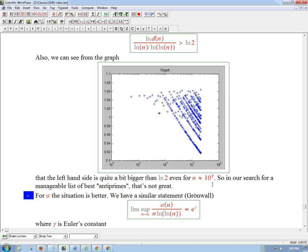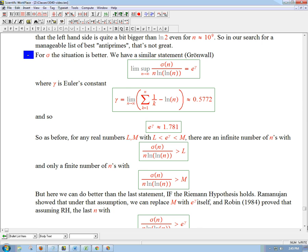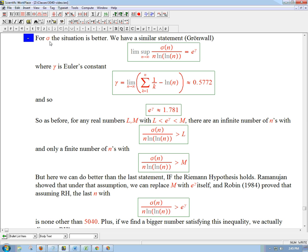So, it looks like this is not a great idea. Now, the nice thing is that if we look, for sigma, we've got actually a very nice situation. Here's the similar statement due to Grönwall. The lim sup, as n goes to infinity, of sigma(n). Remember what the deal was there. If we divide it by n alone, it still grew at a moderate rate. So, the nice thing is if we just put in this really minor modification, ln(ln(n)). Then, we get the same kind of statement that lim sup is equal to a magic number. Here, it's e^gamma, which is a great thing.